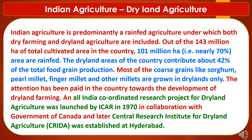Now we will study the role of dryland agriculture in Indian agriculture. Indian agriculture is predominantly a rain-fed agriculture, under which both dry farming and dryland agriculture are included. Out of 143 million hectares of total cultivated area in the country, 101 million hectares — around 70% — are rain-fed. The dryland area of the country contributes about 42% of total food grain production.